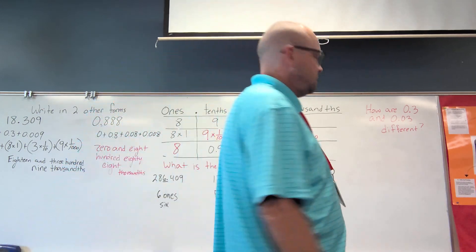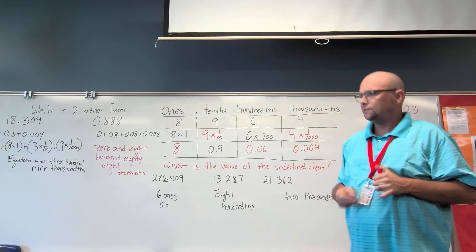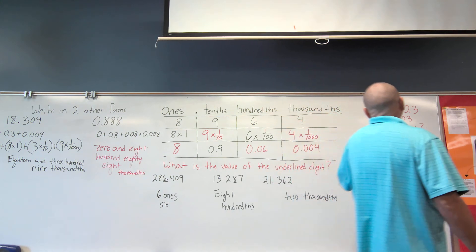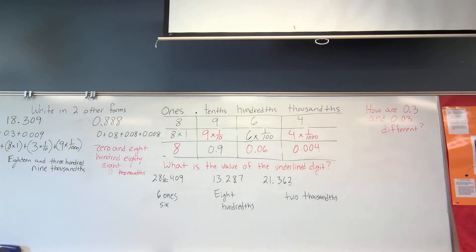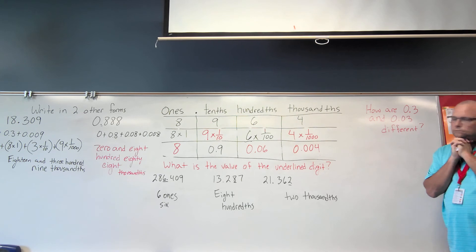How are three tenths and three hundredths different? Let's see, DJ, how are three tenths and three hundredths different? Because the tenths has only one zero and the hundredths has two zeros. Good. The hundredths is two places behind the decimal point. The tenths is just one place behind the decimal point. Jaden, how are three tenths and three hundredths different? Tenths are 100 apart, well no, 90 apart. Yeah, they're 100 apart. Okay.